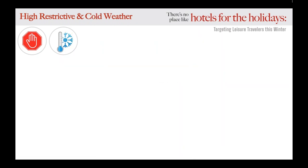Now for the next quadrant — let's keep those heightened restrictions but drop the temperatures to typical cold winter weather. This was about 34 percent of the properties on this call. Many properties in this quadrant could potentially be found in the Northeast, like New York. With strict restrictions and cold weather outside, guests traveling to this part of the country are most likely doing it for a specific reason — whether it's something for work or a family emergency.